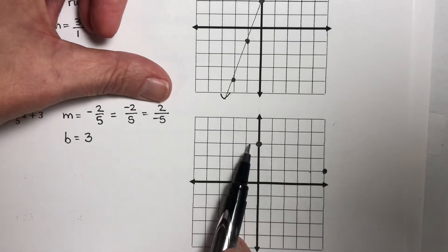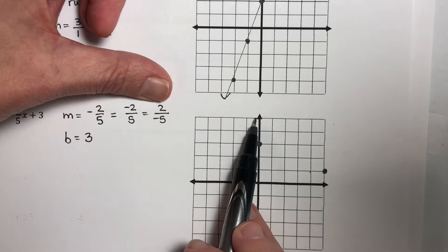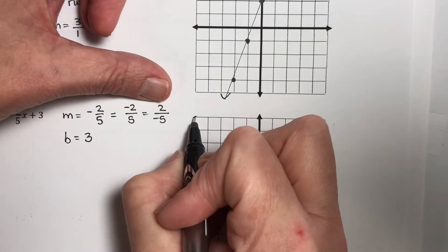Now let's use this one. From this starting point, I'm going to rise positive 2 and run negative 5, which puts me over in this corner.